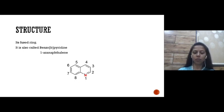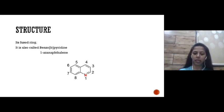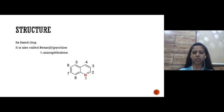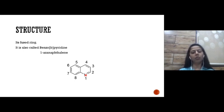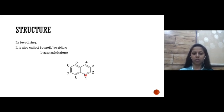If we omit the nitrogen from quinoline, that becomes our naphthalene ring. If we add nitrogen — nitrogen being a heteroatom we call it 'aza' — and since that nitrogen is at the first position, it is 1-azanaphthalene. So we have two synonyms for quinoline: benzopyridine or 1-azanaphthalene.